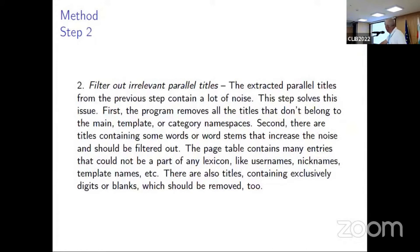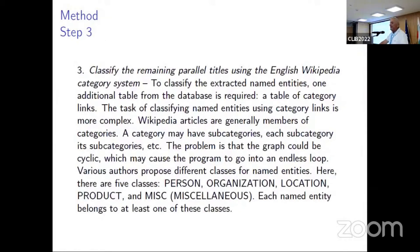The next step is filtering out irrelevant parallel titles. The extracted titles from the previous step contain a lot of noise. First, the program removes all titles that don't belong to the main, template, or category namespaces. Second, titles containing certain words or word patterns that increase noise are filtered out. Finally, entries that cannot be part of any lexicon — such as usernames, nicknames, and template names — are removed.